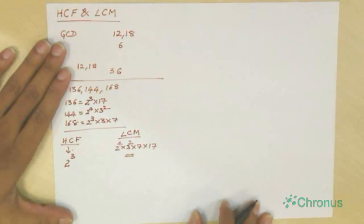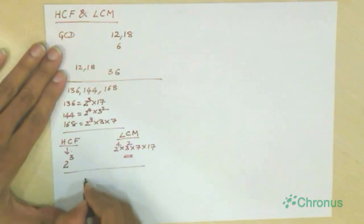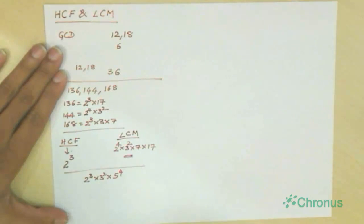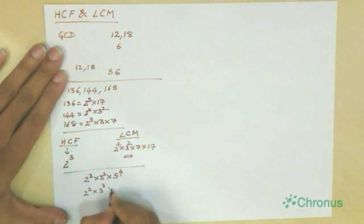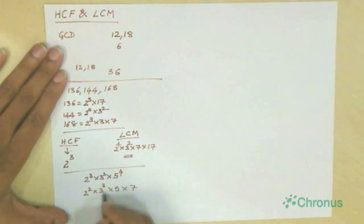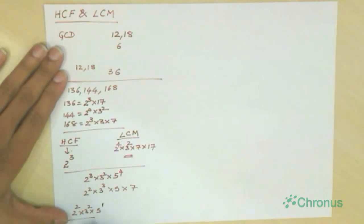Now let's say we have two numbers: 2 cubed into 3 squared into 5 to the power 4, and another number 2 squared into 3 cubed into 5 into 7. To find the HCF of these two numbers, take the common prime factors, which are 2, 3, and 5. Then take the least of the powers: the least power of 2 is 2, the least power of 3 is 2, and the least power of 5 is 1. So the HCF is 2 squared into 3 squared into 5.